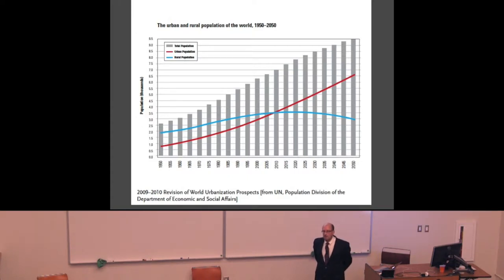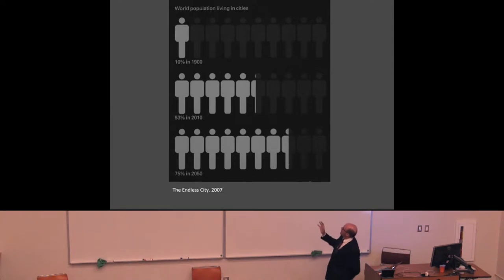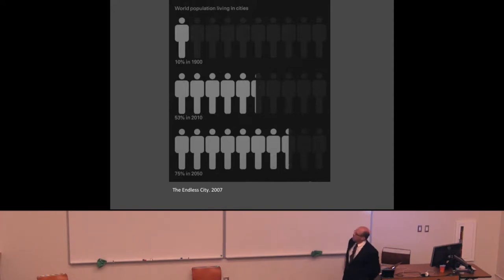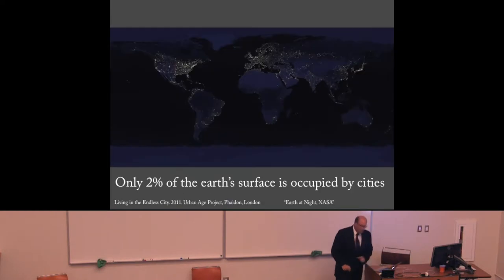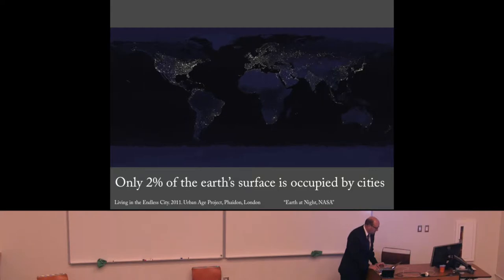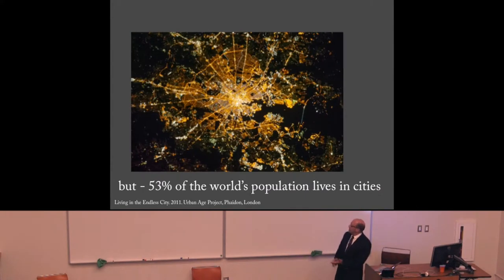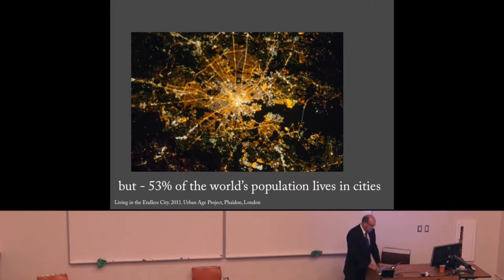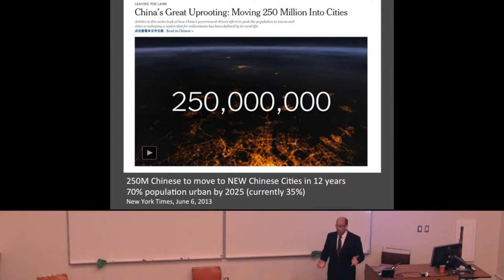Here's another way to look at it: in 1900 the world was only 10% urban, and in 2050 it's going to be 75% urban. But only 2% of the earth's surface is occupied by cities currently. That's a lot of people in small places — quite concentrated and dense. 53% of the world's population lives in 2% of the world's surface. Cities are dense, housing most of the people, and we're going to continue in that direction.